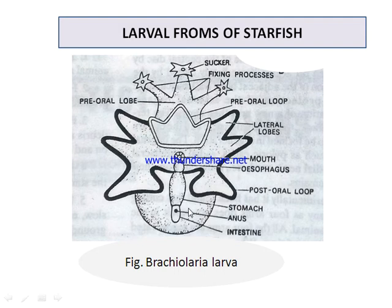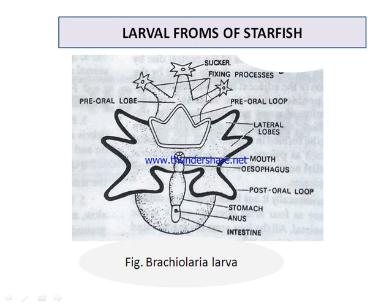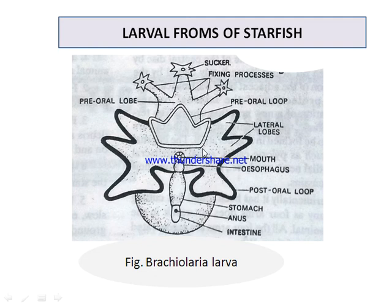The lobes of the Bipinnaria larva form slender ciliated contractile structures called larval arms. The preoral lobe gives rise to three non-ciliated appendages called fixing processes or larval arms, which have suckers or adhesive discs at their ends. These appendages are also called brachiolarian arms or fixing processes. This larva is again bilaterally symmetrical and can swim and feed actively.